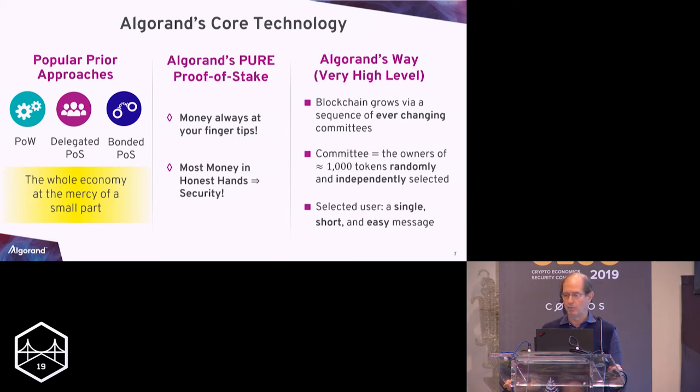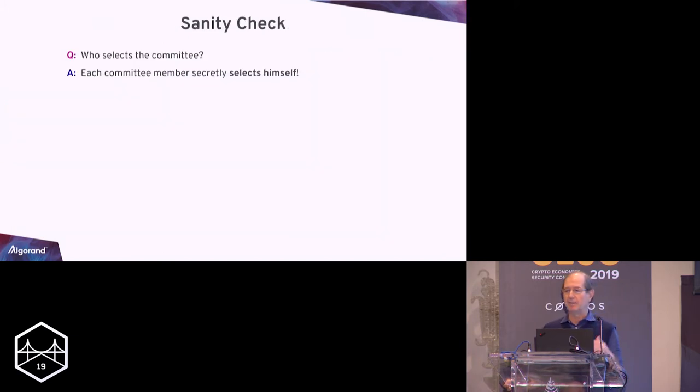At a very high level, block production is delegated to the ever-changing committee. One of these committees, a thousand tokens are somehow randomly selected. We need technology for that. They must belong to somebody. The owners of these tokens are the committee. They produce one block. Next block, another committee, and so on and so forth. If one of your tokens is selected, what do you have to do? To propagate a very short and easy-to-compute message.